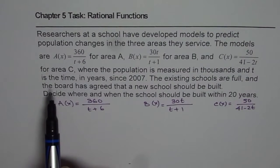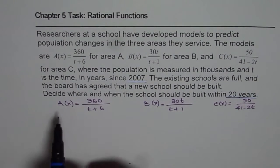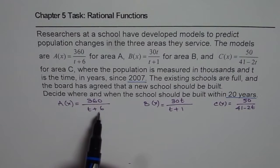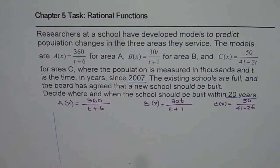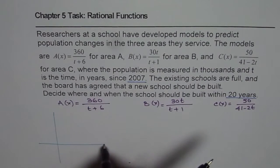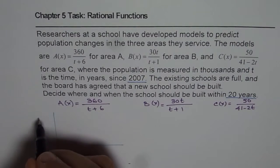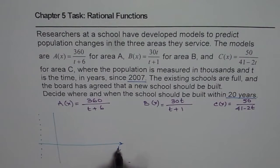Now remember, time t is since 2007 and we will try to consider 20 years of the graph. So when we say A(x) equals to 360 divided by t plus 6, let me make the coordinate axis. We will consider t will be positive for us. We have a vertical asymptote at t equals to minus 6 which will be on the left side, so we are not really bothered about it since we are very worried about t greater than 0. So this is time in years.